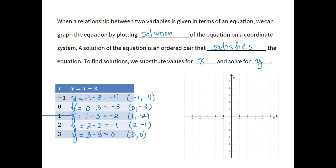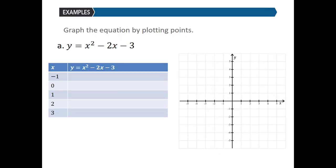Now I'm going to plot the solutions: (negative 1, negative 4) is left 1, down 4; (0, negative 3); (1, negative 2) is right 1, down 2; (2, negative 1) is right 2, down 1; and (3, 0) is right 3, staying on the axis. Notice that these solutions lie in a pattern of a straight line. Connecting those points forms a picture of the solution set. We call y = x minus 3 a linear equation in two variables, partly because its graph is a line.